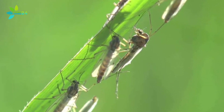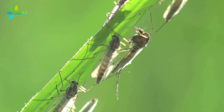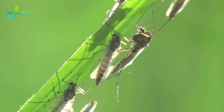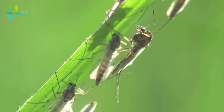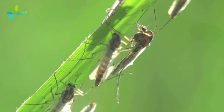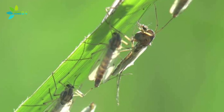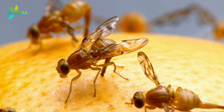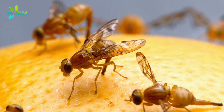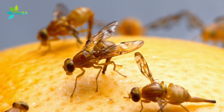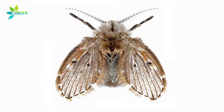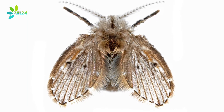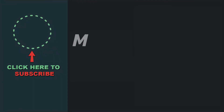Fungus gnats love to lay eggs in the moist soil of frequently watered potted plants. The excess moisture provides the perfect environment for gnat larvae to thrive on organic matter and plant roots. Fruit flies, on the other hand, thrive on ripe fruits and vegetables on kitchen countertops and in garbage cans. Drain gnats, often called drain flies, feed on organic material in garbage disposals and sink drains.